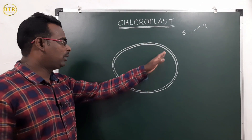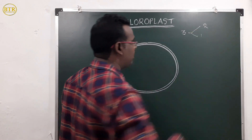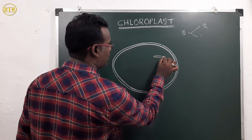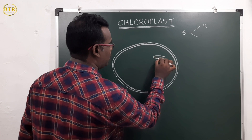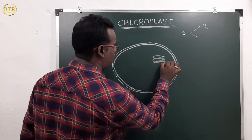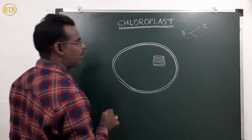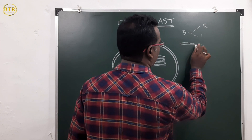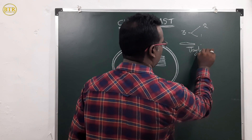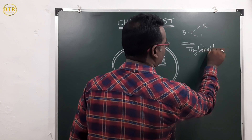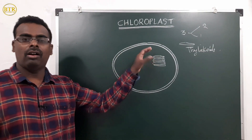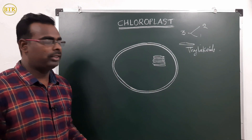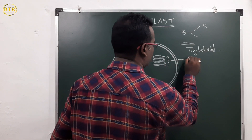Out of three membranes, two membranes cover the chloroplast, and the remaining third membrane forms sac-like structures. These sac-like structures are arranged one above another in the form of stacks. These sac-like structures are called thylakoids. This stack of thylakoids is called grana.